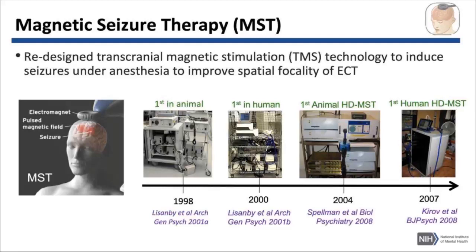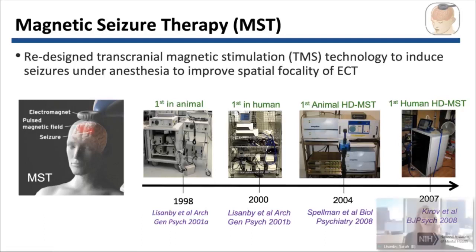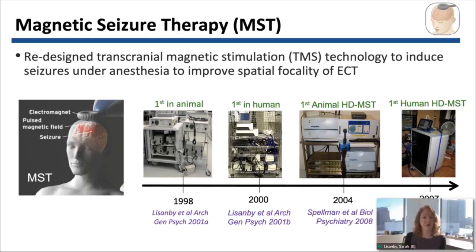That's the rationale for magnetic seizure therapy, or MST. We basically redesigned transcranial magnetic stimulation devices in order to enable them to induce seizures in patients with depression under anesthesia, as a way of improving the spatial focality of ECT, because magnetic fields pass through the scalp and skull without impedance, giving us better control over where we're depositing the induced electric field.